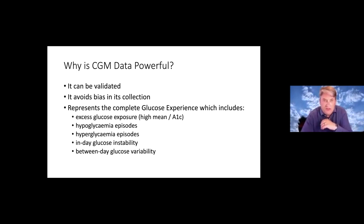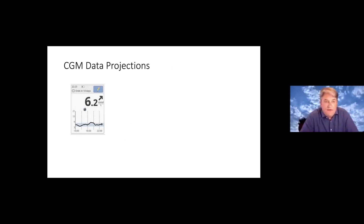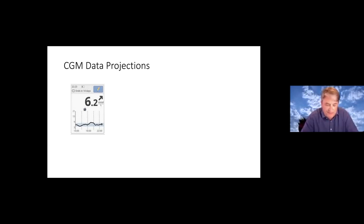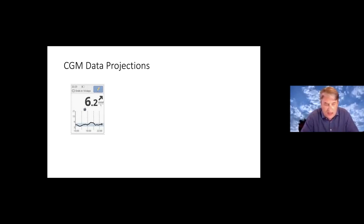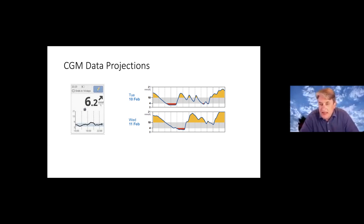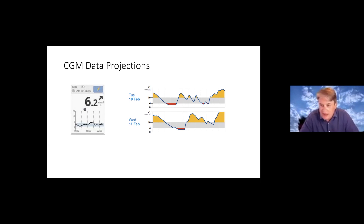We see all that data in a variety of different presentations. The simplest is on the screen of the reader or phone: a number, an arrow, and a line — the number being now, the arrow being the last 15 minutes' direction of travel, and the line being the last six to eight hours. We can also look at individual days, and looking at areas which repeat and areas which don't repeat gives us lots of useful information for consultation.